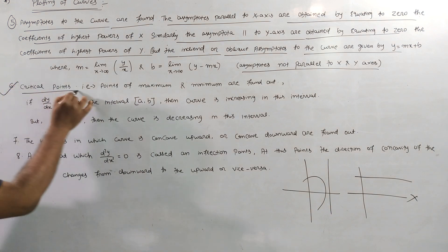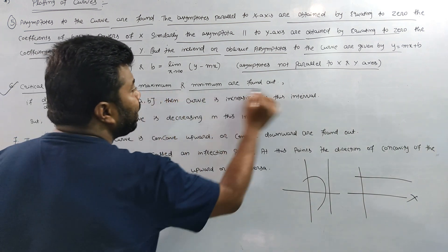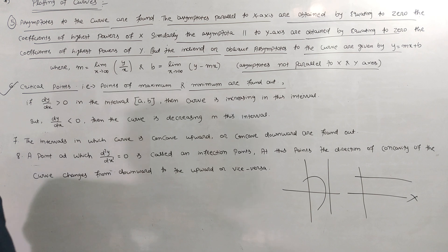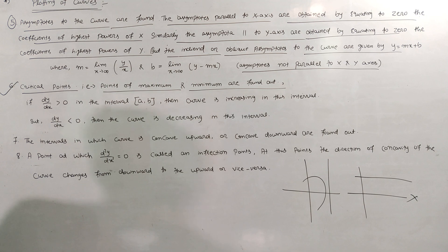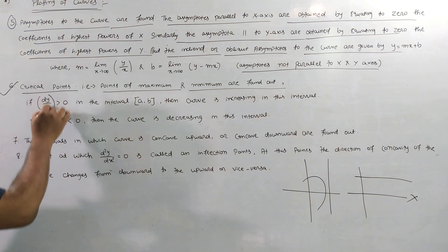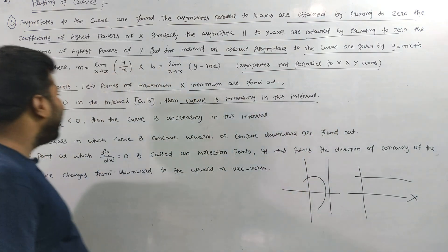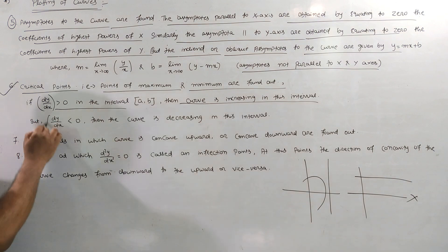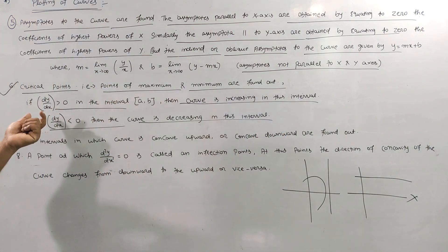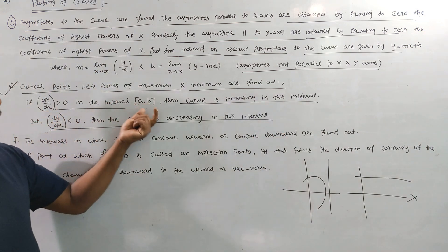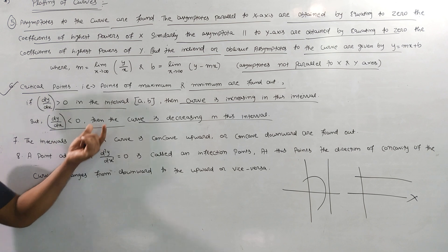Next, we find the critical points — the points of maximum and minimum are found. If dy/dx > 0, then the curve is increasing. If dy/dx < 0, then the curve is decreasing.